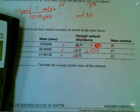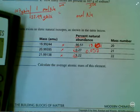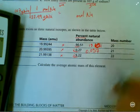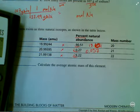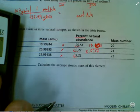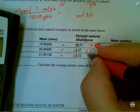And then 21.99138 times 0.0922. Three significant figures. Holy cow, what did I just do here? Mess something up. Oh no, that's right. My bad. Psyched myself out.